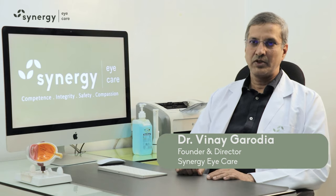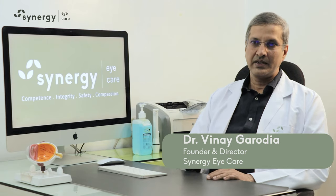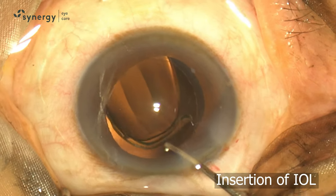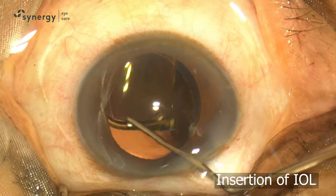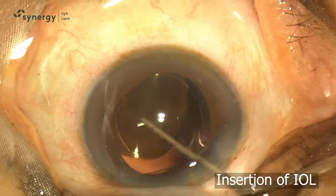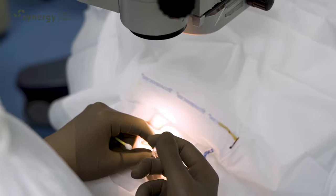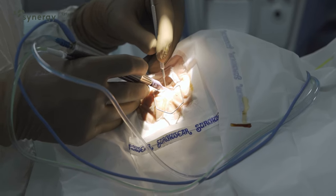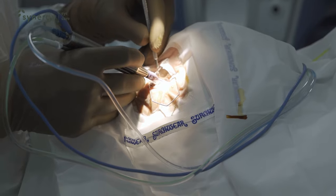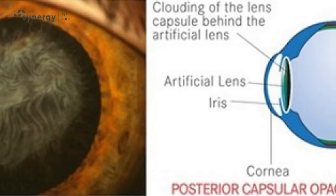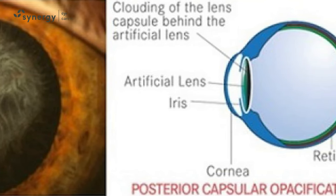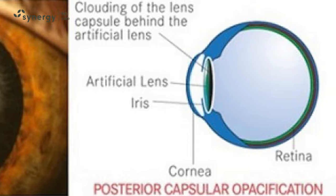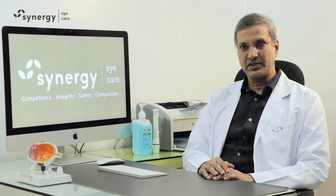Cataract surgery involves implanting an artificial lens on top of a membrane called the posterior capsule. Over a period of time, in some patients, this transparent capsule turns opaque, leading to a decrease in vision. This is called after cataract, or posterior capsular opacification.